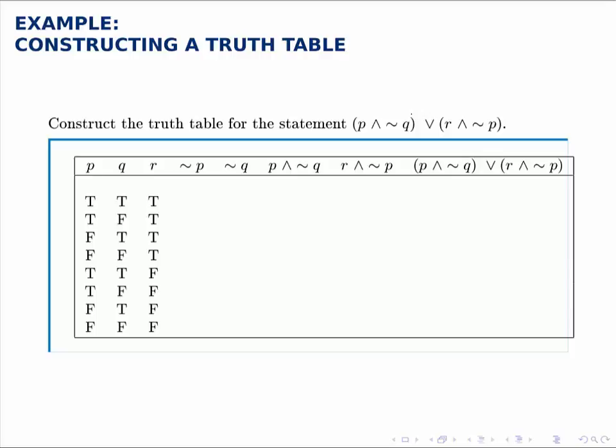So because we have three statements, now we need to account for eight possibilities, because P could be true or false, Q could be true or false, and R could be true or false. So since there are two possibilities for each of them, if we multiply those together we get eight total possibilities.